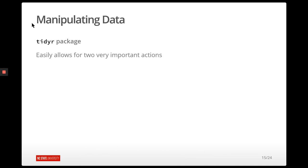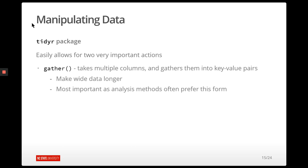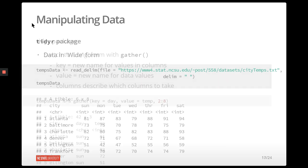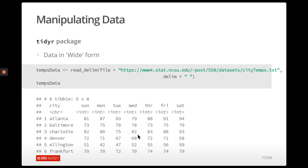Now we have a good idea about creating new variables that are functions of previous variables and doing basic summarizations. Another common thing we want to do is manipulate the shape of our data sets. The tidyr package allows for two really important actions: making a wide data set longer, and the reverse. A wide data set has multiple observations within a single row — for instance, Atlanta has a temperature observation for Sunday, Monday, Tuesday, etc., all in the same row.